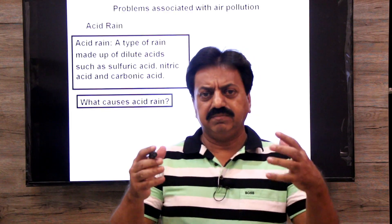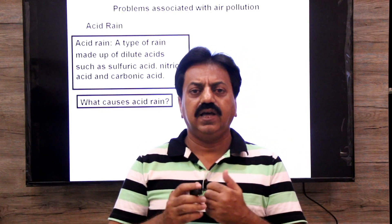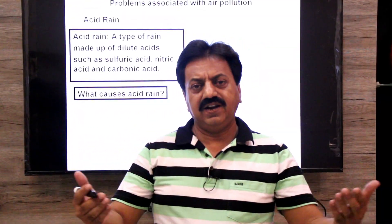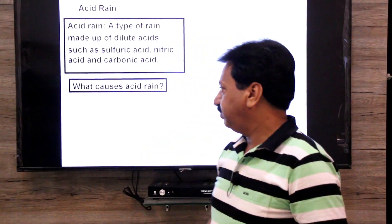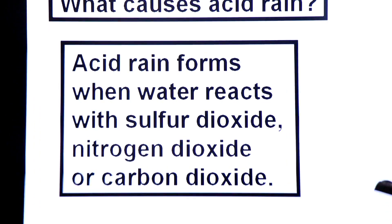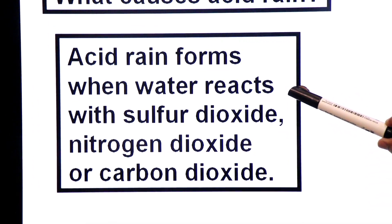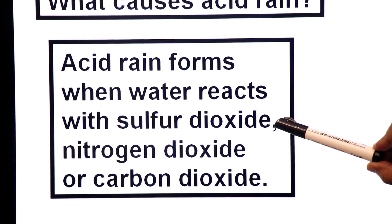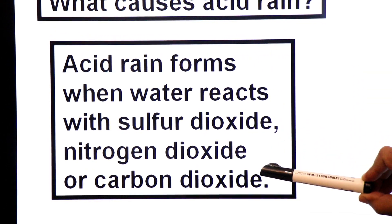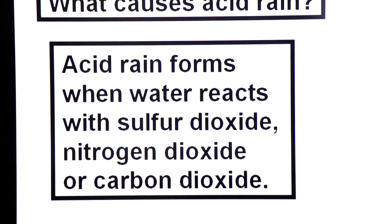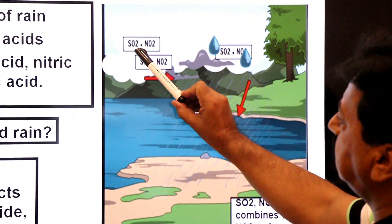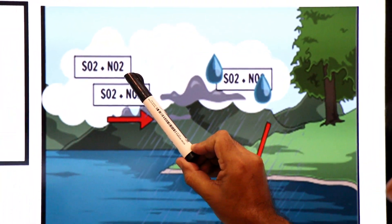These oxides mix with the tiny droplets of clouds and are converted into acids, and whenever rainfall occurs the rain contains acids. So what causes acid rain? Acid rain forms when water of the clouds reacts with sulfur dioxide gas, or nitrogen dioxide gas, or carbon dioxide gas. So oxides are the main cause of acid rain. Here you see sulfur dioxide, here you see nitrogen dioxide.